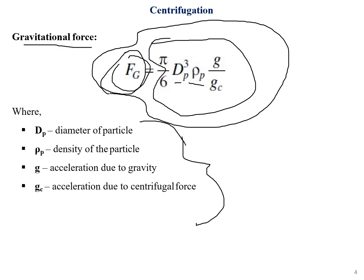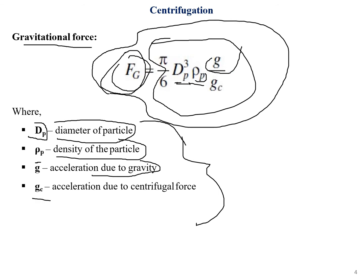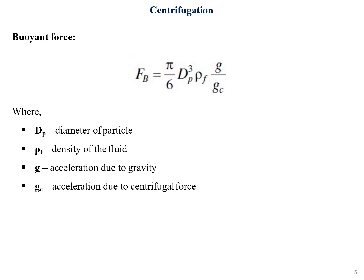To explain the terms: dp is the diameter of the particle; ρp is the density of the particle; g is the acceleration due to gravity; and gc is the acceleration due to centrifugal force. These apply to the gravitational force equation.